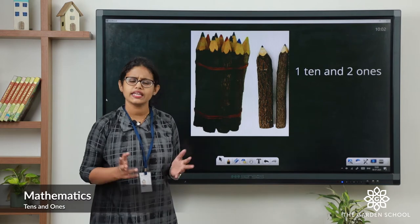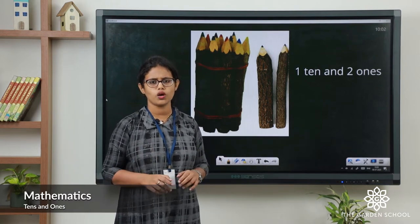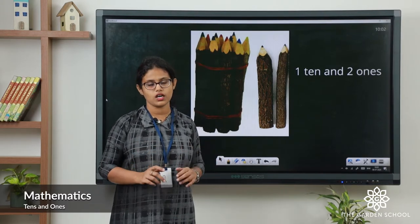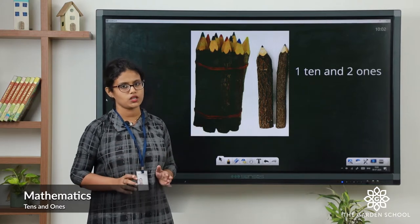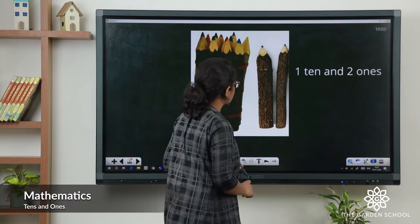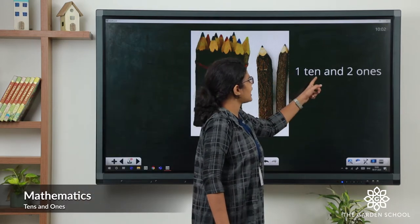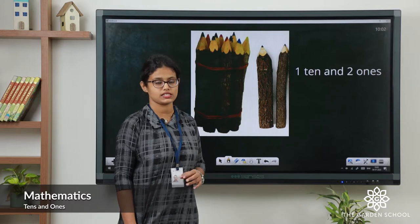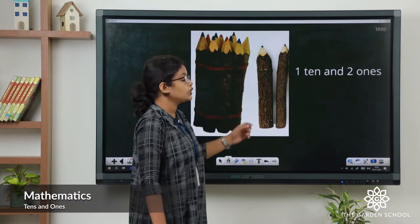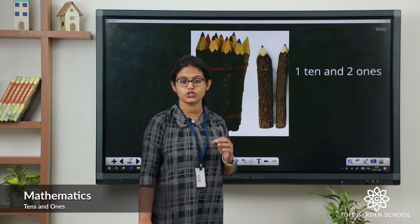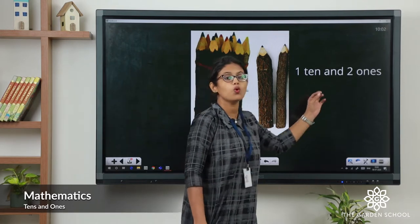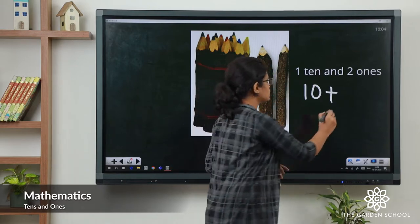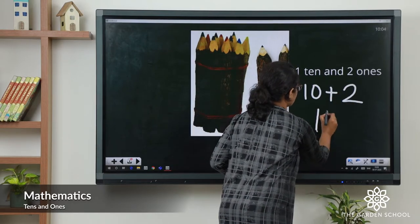So remaining two pencils are there. Can we make a bundle with two pencils? No, because the number is less than 10. If there were 10 pencils we could have made a bundle of 10, but there are only two pencils remaining. So we have two single pencils. We can write it as one 10 and two 1s. One 10 means 10 and two 1s means 2. It makes number 12.